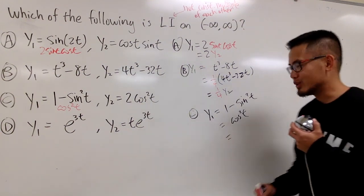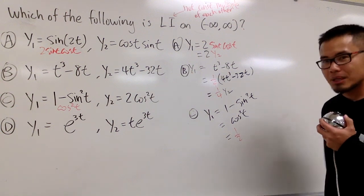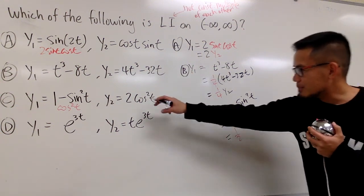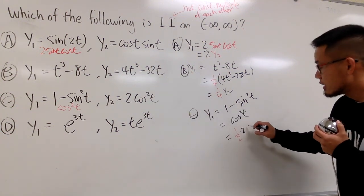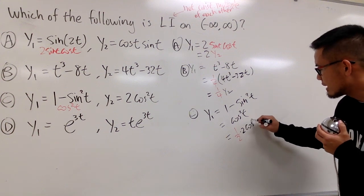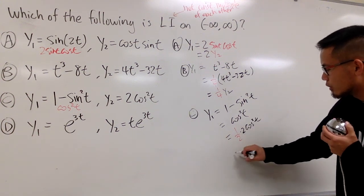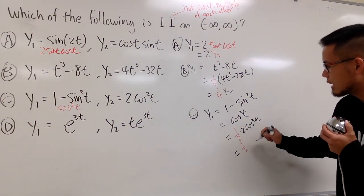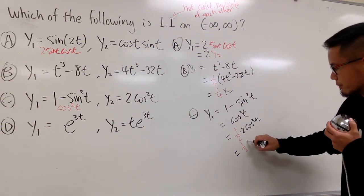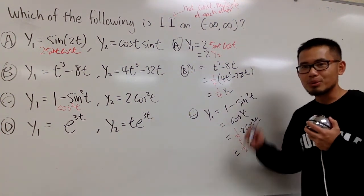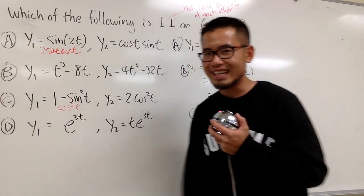I want to make it look like it's a constant multiple of the second one. I have 2, I don't want a 2. I can fix that by multiplying by 1 half. 1 half times 2 cosine 2t. They cancel, and you'll see this is 1 half times y2. So once again, constant multiple of each other. LD again.